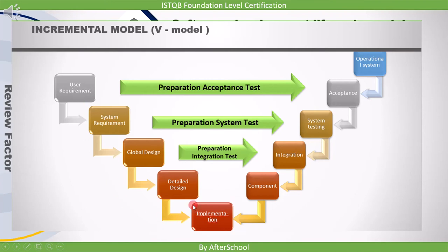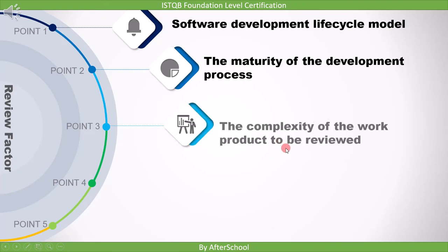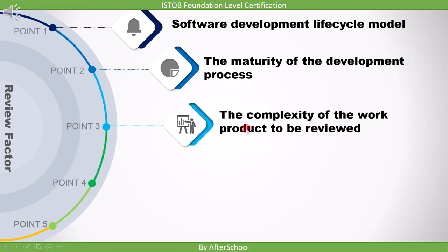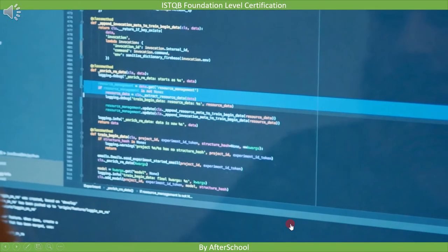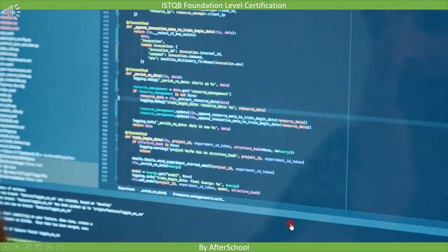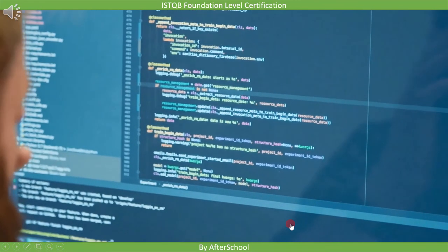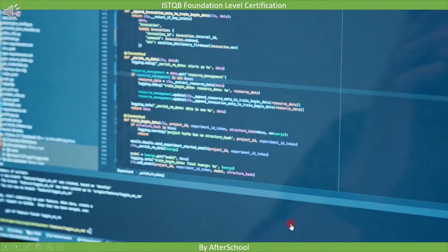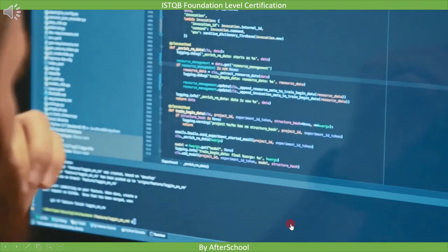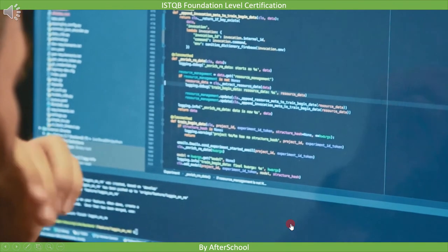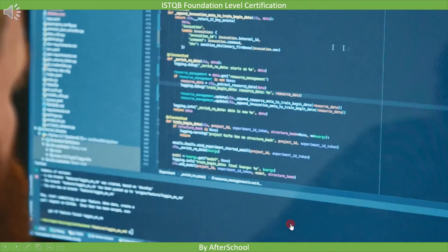If it's the first time we are following a process, then it makes more sense to go for the formal review process, because if we find more defects at the start and document them, it will help in the future to not repeat such mistakes. The third point is the complexity of the work product to be reviewed. If the code is too complex, it's better to go for a formal review process so we can document the findings. Formal review brings a review meeting into the picture where responsible people discuss the code and each team member comes to a common understanding.